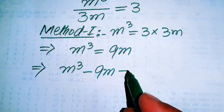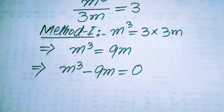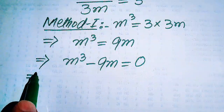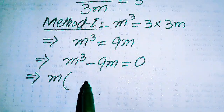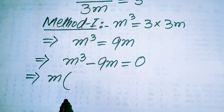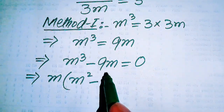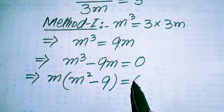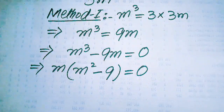When we move 9m to the left hand side it becomes minus 9m, and this whole equation is equals to 0. In the next step we take common m from here, and we get the remaining values: m squared minus 9, and this whole equation is equals to 0.